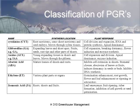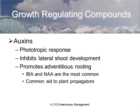Jasmonic acid is primarily involved in things like tuber development, fruit ripening, and seed germination. You'll have to really hunt the literature to find much more than that.